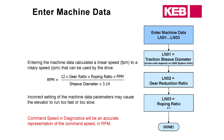You've done the encoder learn and the motor learn, and now you want to enter in the machine data. This is where you enter the shiv diameter and gear reduction ratio if you have a geared machine. If you're using serial speed control, the controller writes a direct RPM value to the drive, so the machine data isn't going to affect the speed of the car. However, if you're using digital or binary speed control where the drive is in charge of the profile, changing your shiv diameter or gear reduction ratio is going to change your speed.